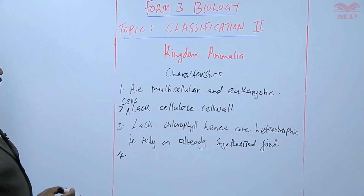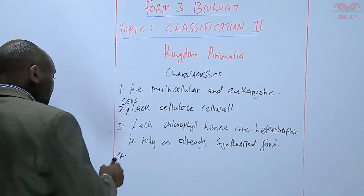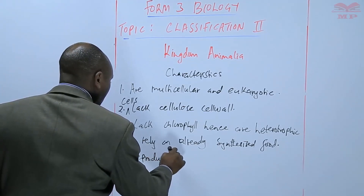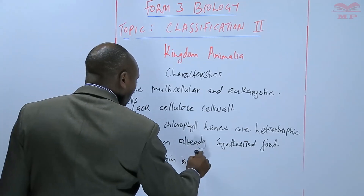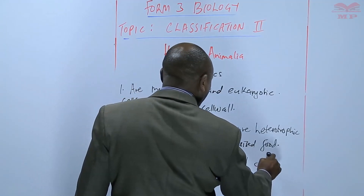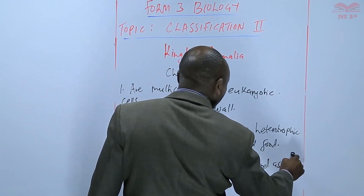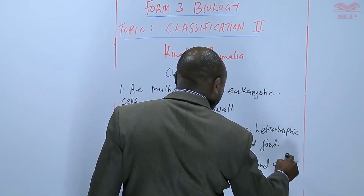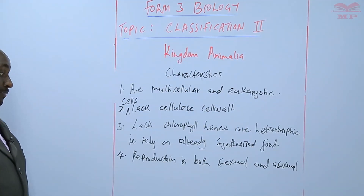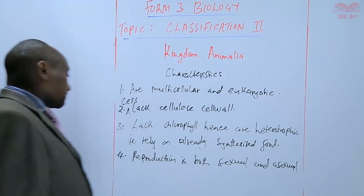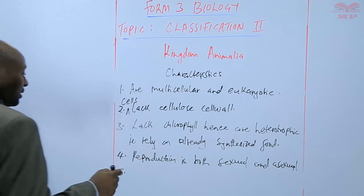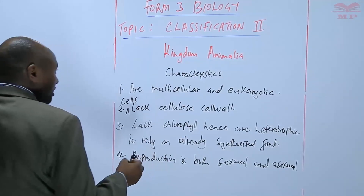In terms of reproduction, it is both sexual — which is the main one — and asexual. There are a few cases of asexual reproduction, where there is no use of gametes.